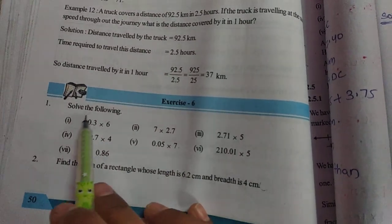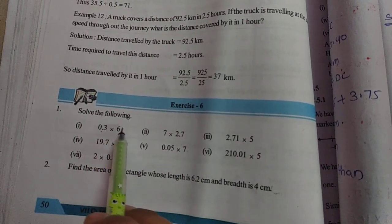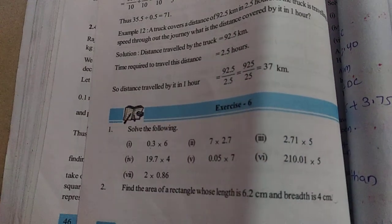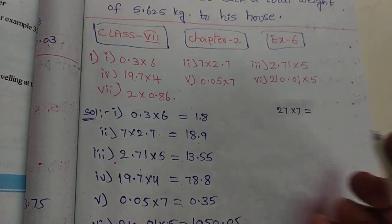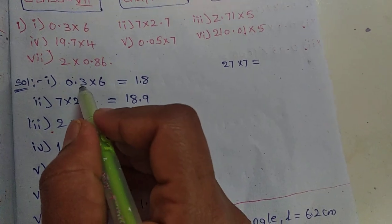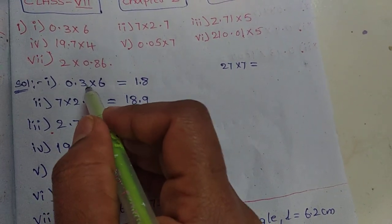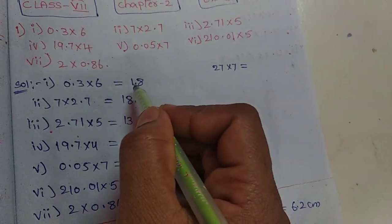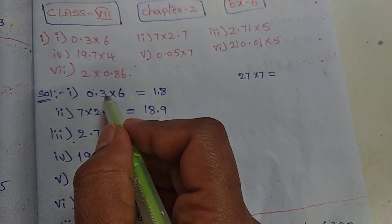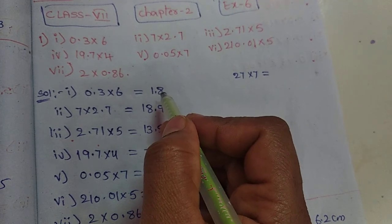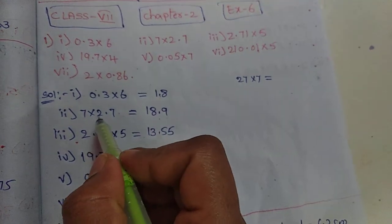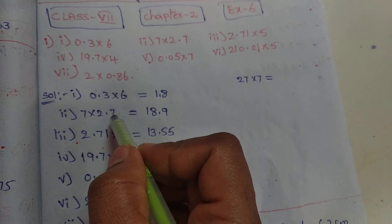See this first problem: solve the following 0.3 into 6. Here my decimal number and whole number multiplication is done. First, multiply normally: 6 into 3 is 18. The decimal point has one digit, so in the answer also we count one digit from right side. So here we should place the decimal point, 1.8.